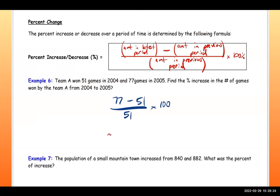So: 77 minus 51 is 26, divided by 51, then times 100, which gives approximately 50.98 percent. So 50.98 percent is the percent increase in games won.